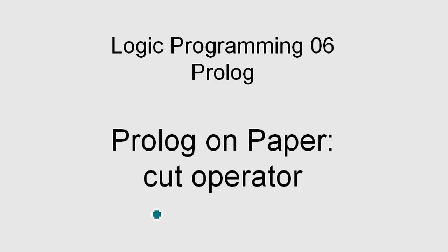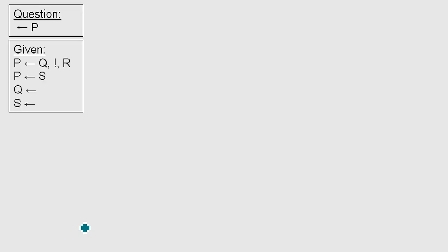This time I'm going to explain the cut operator. To spoiler a little bit, the cut operator manipulates the backtracking, the way backtracking works. And to be more precise, it tells Prolog which decisions do not have to be reconsidered.